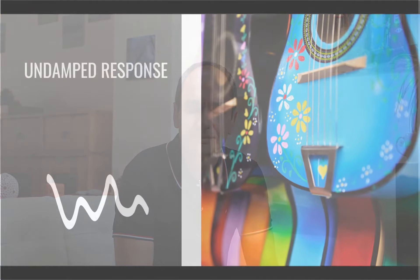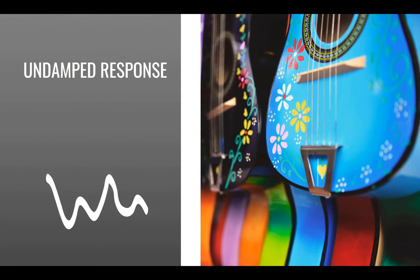Multiple degrees of freedom systems can be represented by masses connected to each other with springs. We will use a simple example with two masses and three springs to illustrate how you compute the response of multiple degrees of freedom systems.